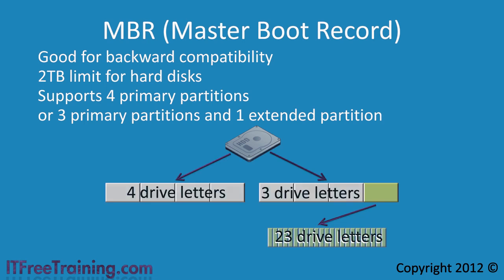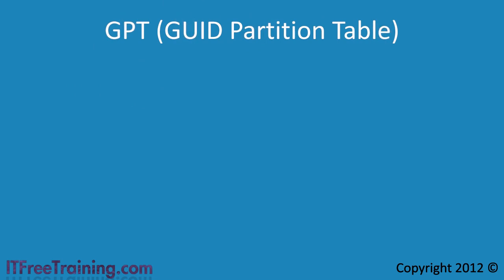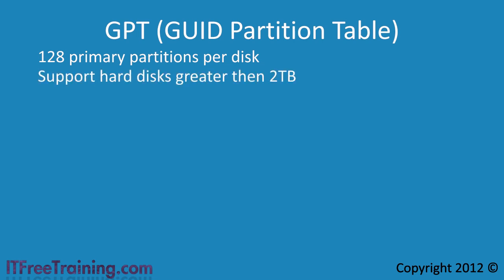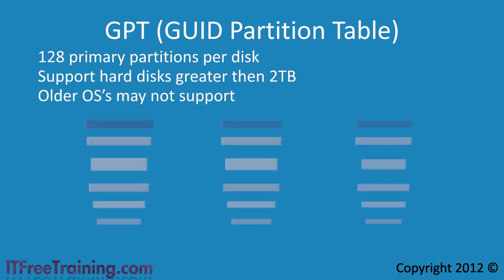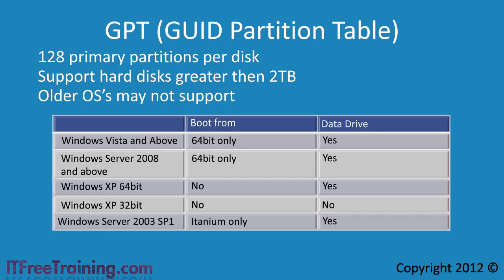The next type of partition is GPT. GPT or GUID Partition Table supports 128 primary partitions per hard disk. The big advantage with GPT partition tables is that it supports hard disks over 2 terabytes. The disadvantage of GPT is that older operating systems may not support it. The support of GPT varies from operating system to operating system. Windows 7 and Vista 64-bit editions can read and write to GPT as well as boot from them. Newer 32-bit operating systems can only use GPT hard disks as a data drive; booting is not supported.